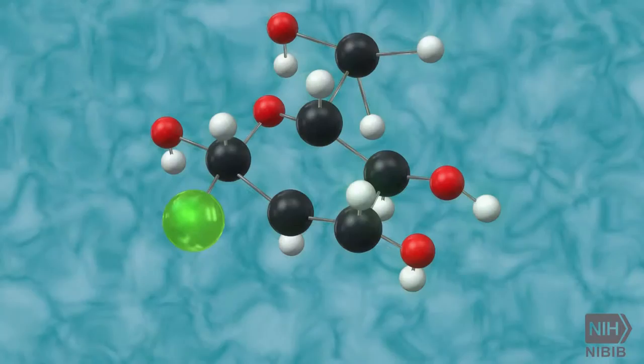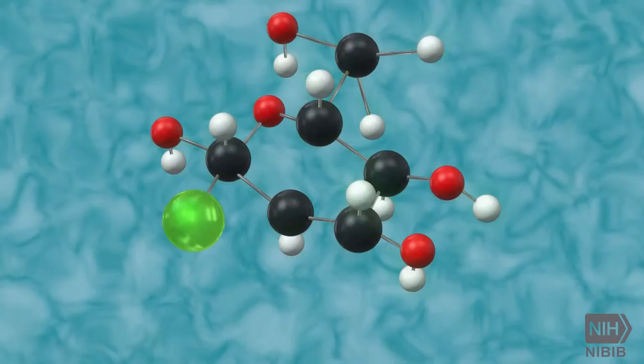The tracers are made up of carrier molecules that are tightly bonded to a radioactive atom called an isotope. The carrier molecule can interact with or bind to specific proteins or sugars in the body.